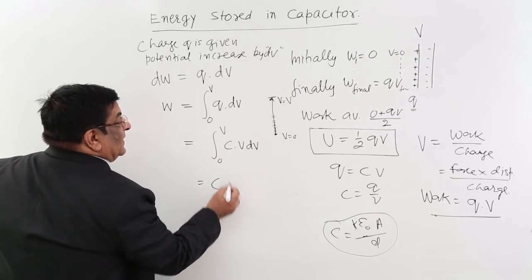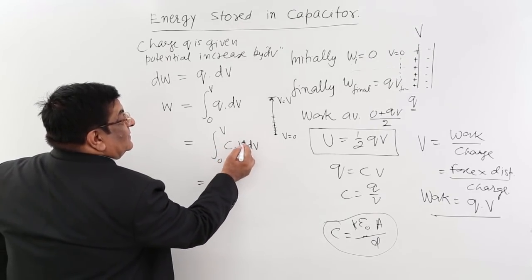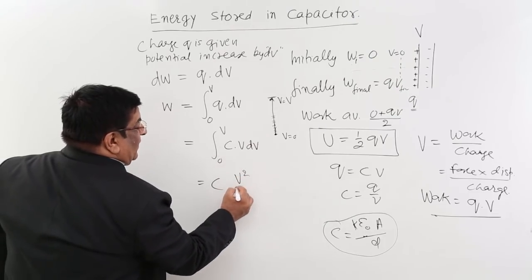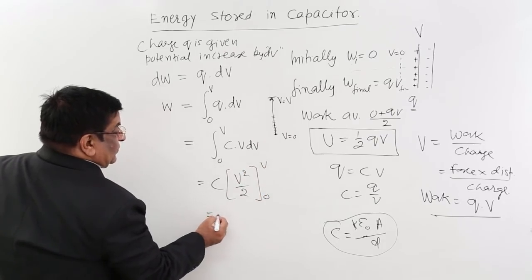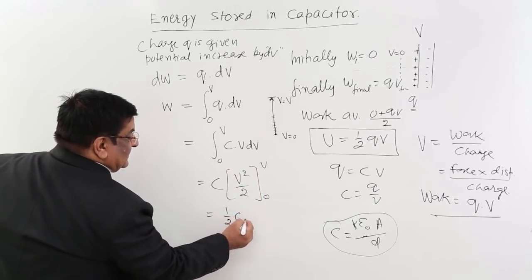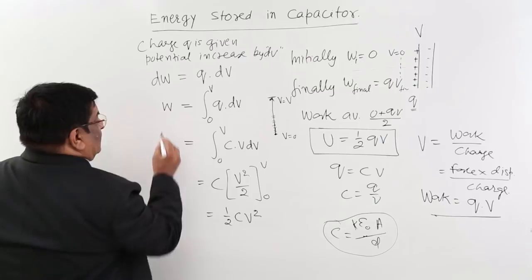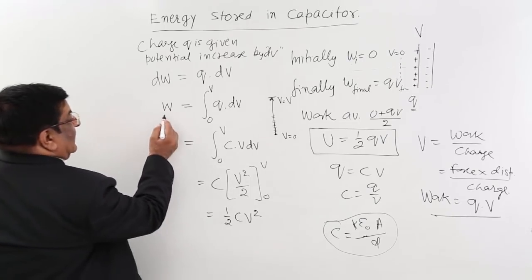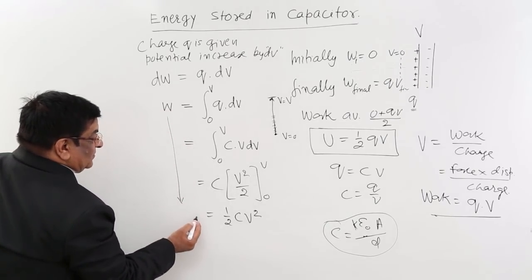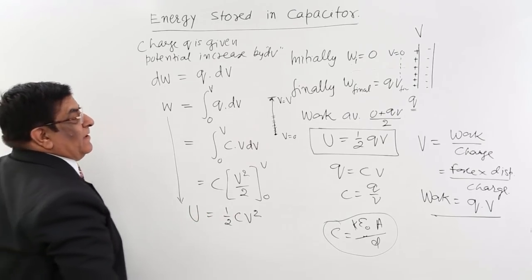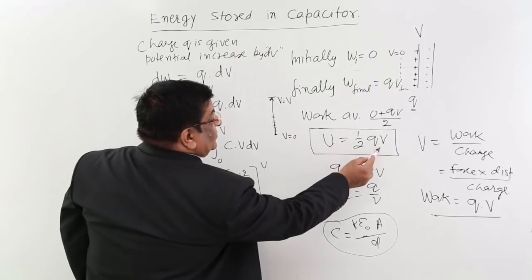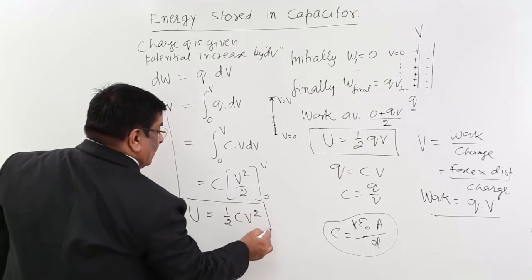It will come out. Integration of V DV is V square upon 2. So this is half CV square. This is work done and this work done converts to energy. So energy is half CV square. We did energy equals half QV. So these two formulas.